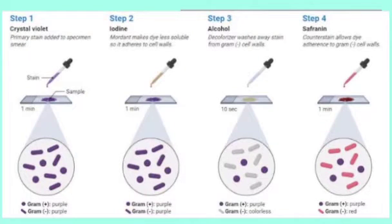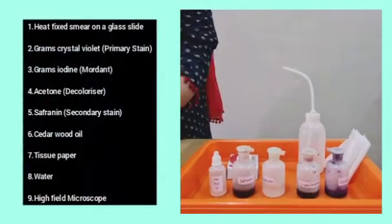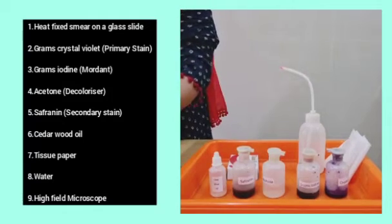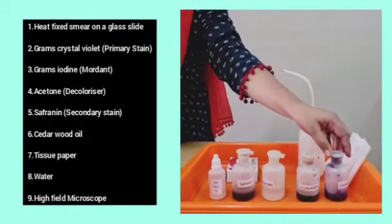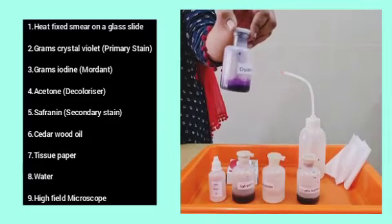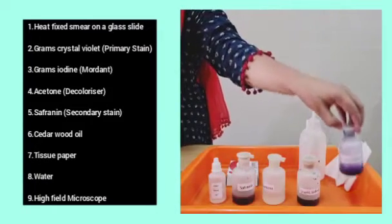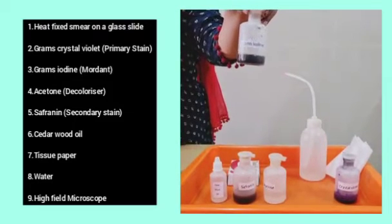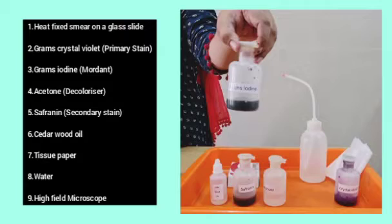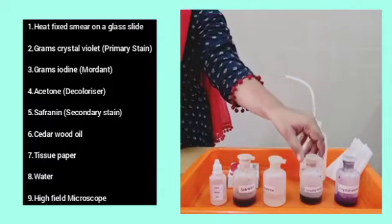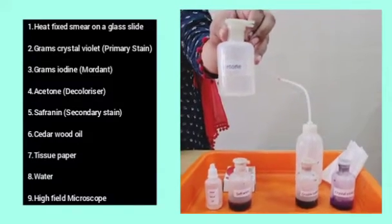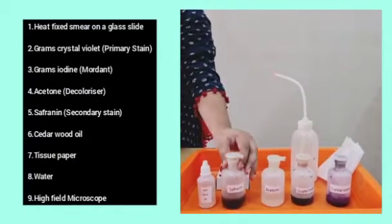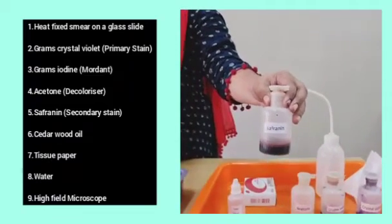Now, the requirements for gram stain. Number 1: Heat fix smear on a glass slide. Number 2: Crystal violet which is a basic dye and it is a primary stain used. Number 3: Grams iodine which is a mordant that is a fixative of the primary stain. Number 4: Acetone, it is a decolorizer. Number 5: Saffronin which is a secondary stain or a counter stain.